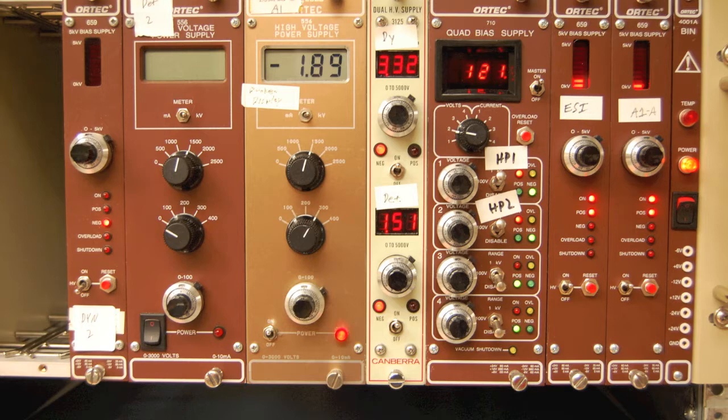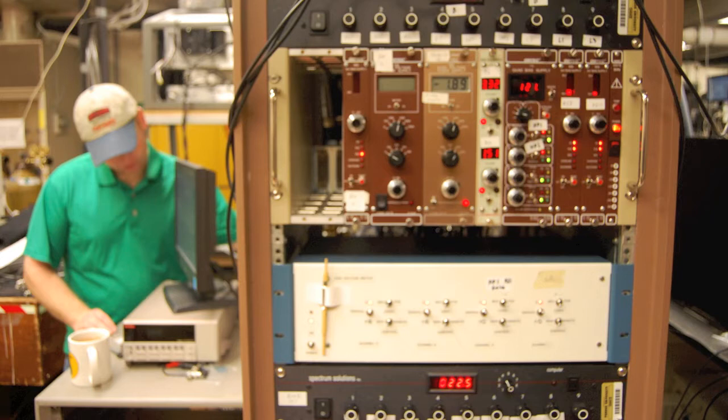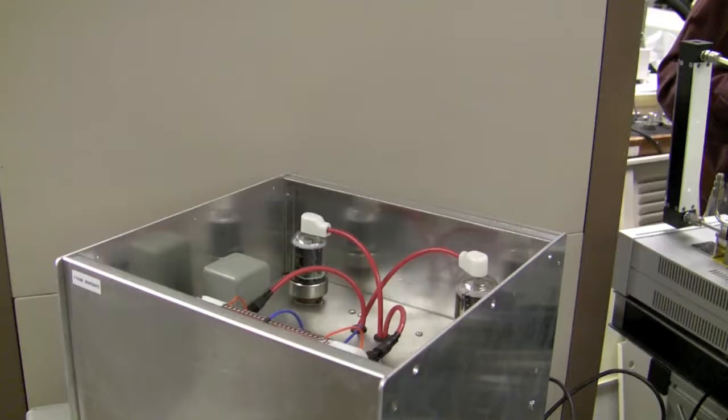They have, in fact, been involved throughout the building and construction and testing that we've done to date on this new instrument. In particular, their experts, Rob Oglesby, has been really working with one of our students, James Redwine, on a daily basis. And they're building these RF circuits, these radio frequency circuits, that are used to trap the ions and mass analyze them. They're electronic circuits that are designed to do that.